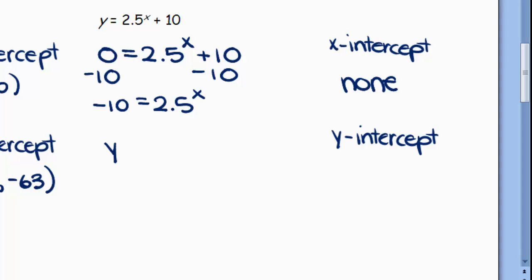For the y intercept, let x be 0 and simplify. 2.5 to the 0 is 1, and 1 plus 10 is 11. The y intercept is (0, 11).